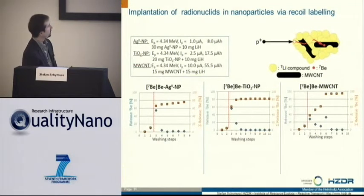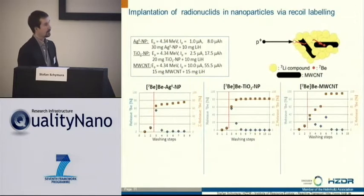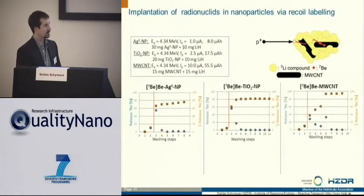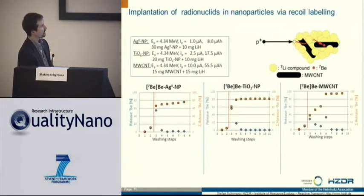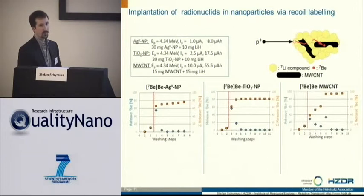The first washing steps under ethanol don't produce much release, since we open the capsules under ethanol. Then we go to water, and eventually there is an acid washing step to remove any residual lithium hydride — this is where the main loss of activity comes. You can also see that the loss of produced activity correlates with the density of the material. The silver particles are denser than the other particles, so they can stop and catch more of the beryllium recoils flying through the sample.